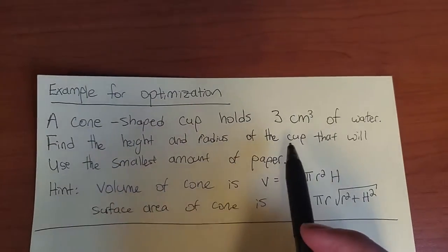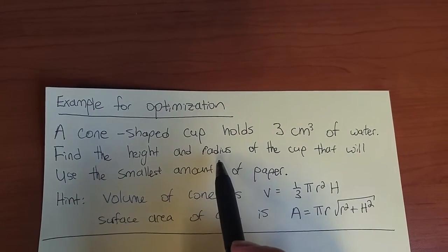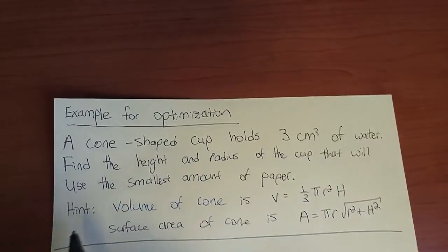We have a cone-shaped cup that holds 3 cm³ of water. We want to find the height and radius of the cup that will use the smallest amount of paper. And we get two hints.